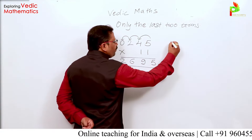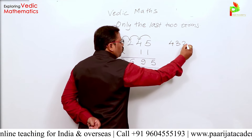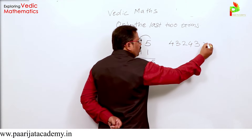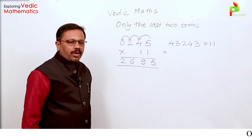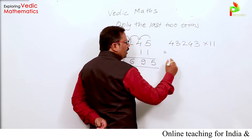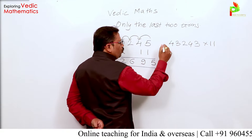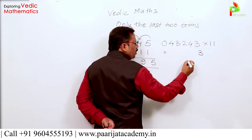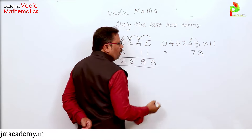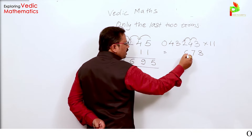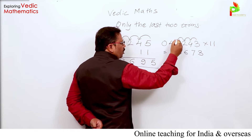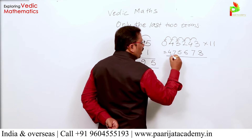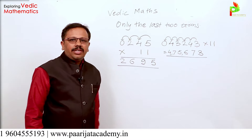Now let's go for a bigger number — 43243. This is a 5-digit number, and we can even multiply it horizontally using this technique. Again, I prefix 0. I write the last unit digit 3 as it is. Then: 3 plus 4 is 7, 4 plus 2 is 6, 2 plus 3 is 5, 3 plus 4 is 7, and 4 plus 0 is 4. So our answer is 4,75,673.